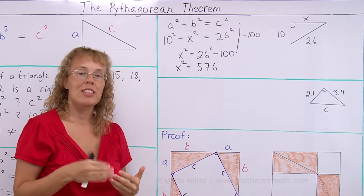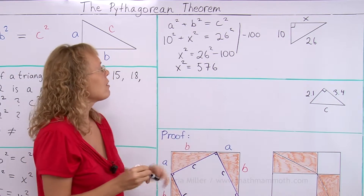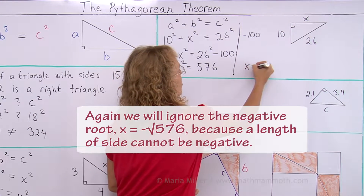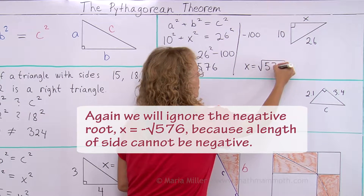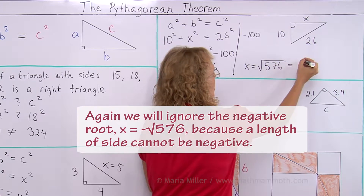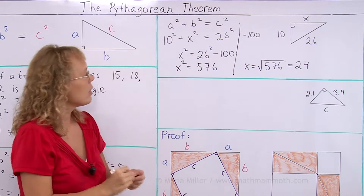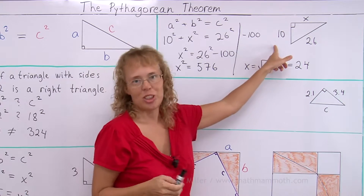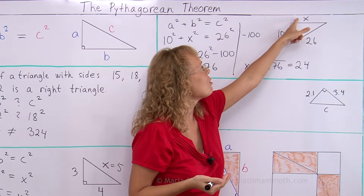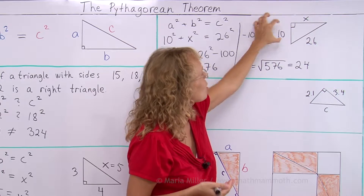We use the calculator and take the square root of 576. X equals the square root of 576, which equals 24. You can see my image is not to scale — if this side is 24, and the other is 10 and 26, the short side should look much shorter.